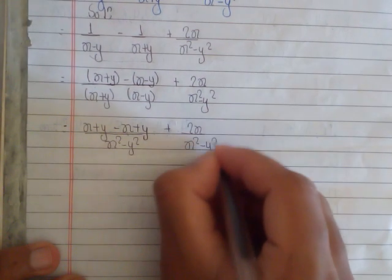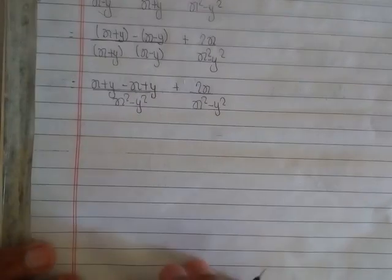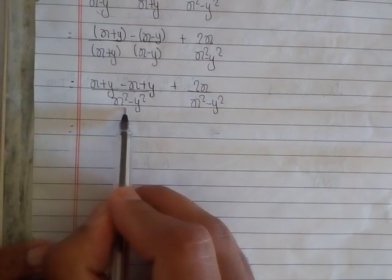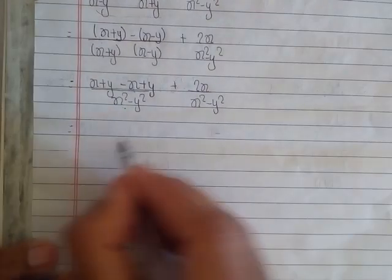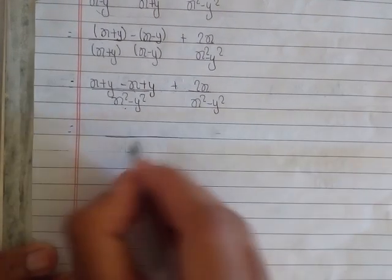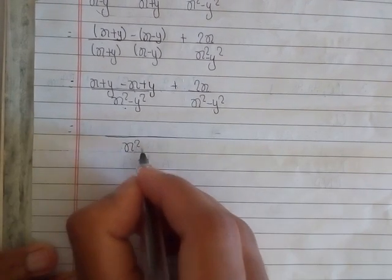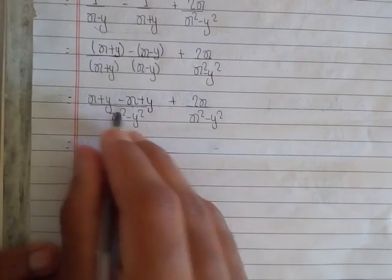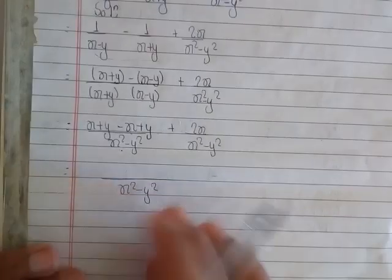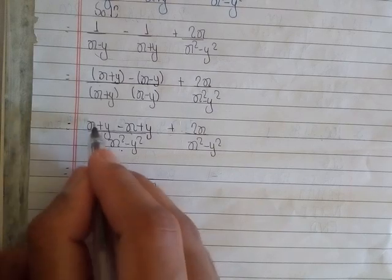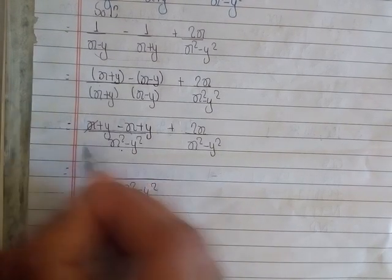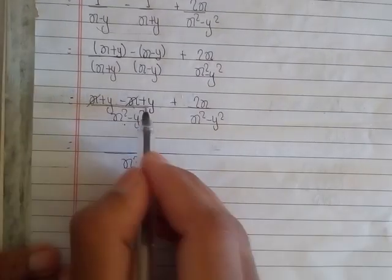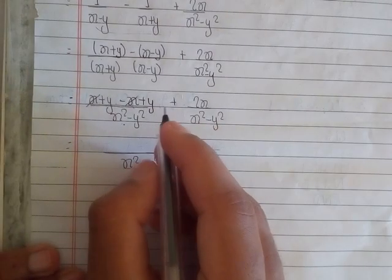In the next step, you can see our bases are the same, so we can take x²-y² common. We'll add here - x+x-x cancels, and y+y becomes 2y.